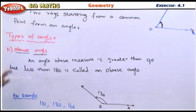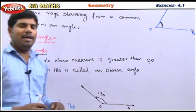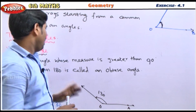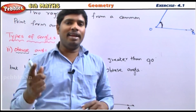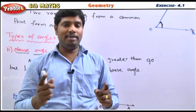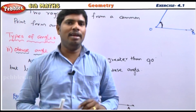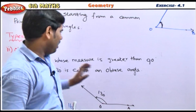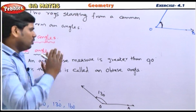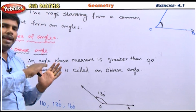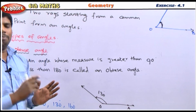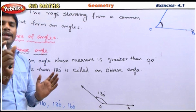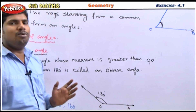The next type: an angle whose measure is greater than 90 degrees but less than 180 degrees. The measure is between 90 and 180 degrees.